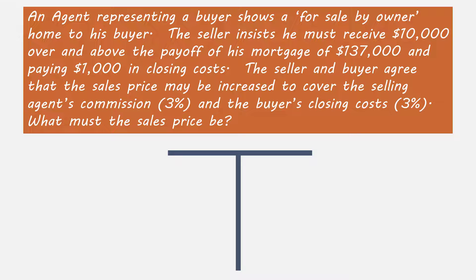Let's move on to our next question. An agent representing a buyer shows a for-sale-by-owner home to his buyer. The seller insists he must receive $10,000 over and above the payoff of his mortgage of $137,000, and paying $1,000 in seller's closing costs. The seller and buyer agree that the sales price may be increased to cover the selling agent's commission of 3% and the buyer's closing cost of 3% of the sales price. What must the sales price be? The question here is: what must the sales price be to net the seller $10,000 after all other expenses from the sale.